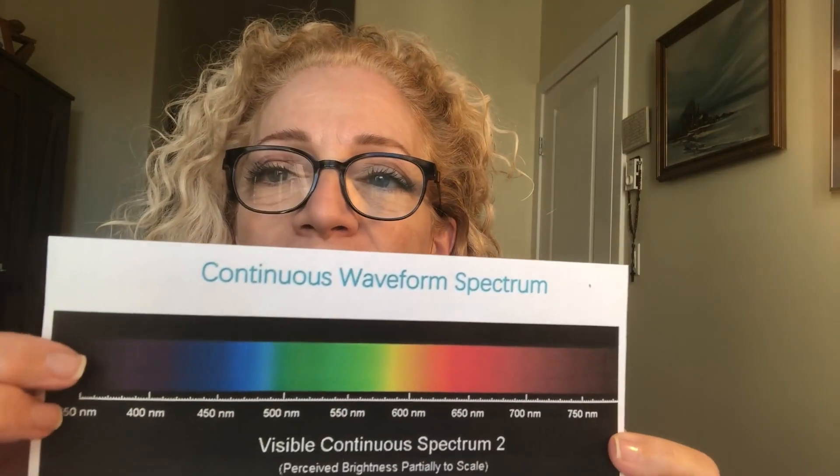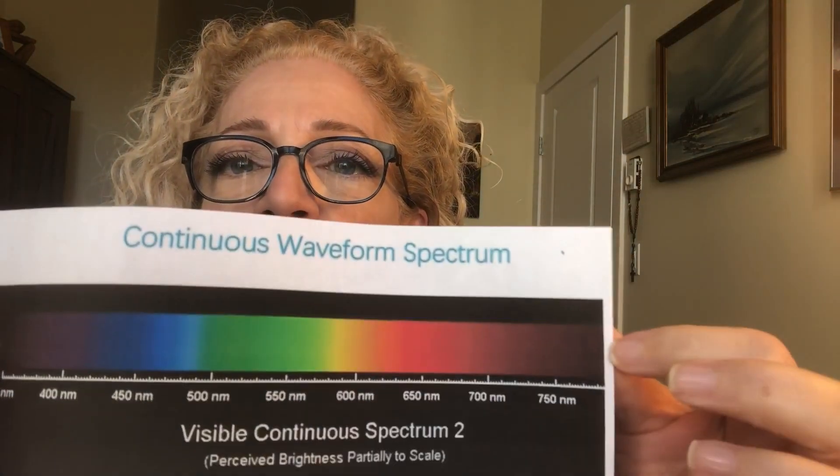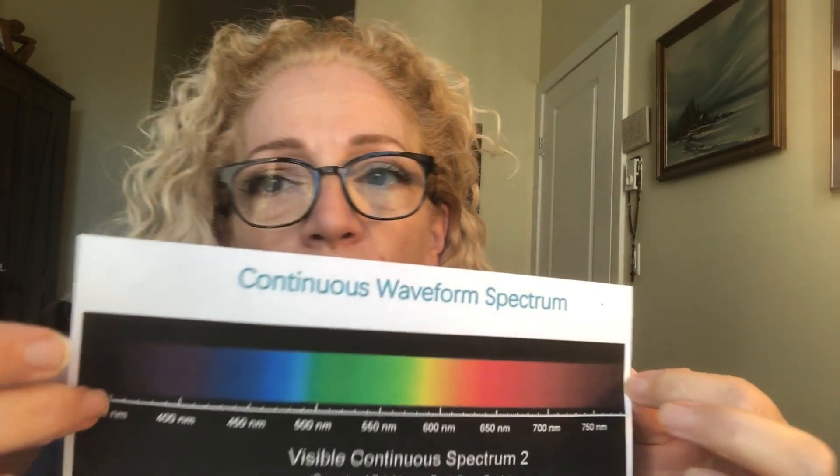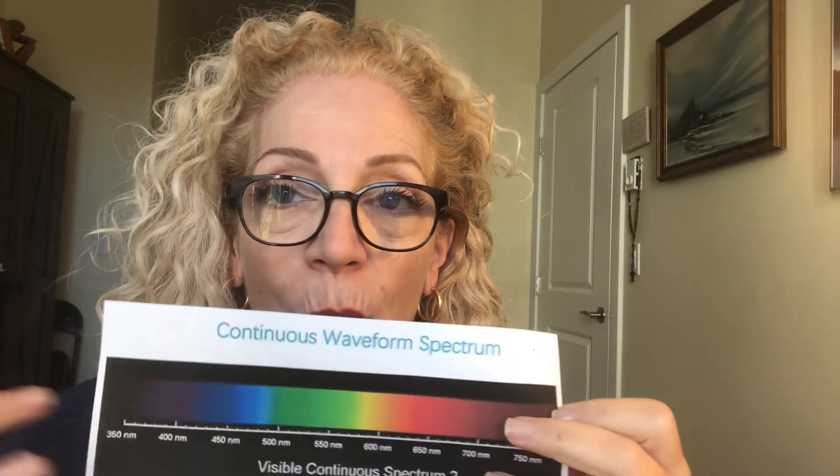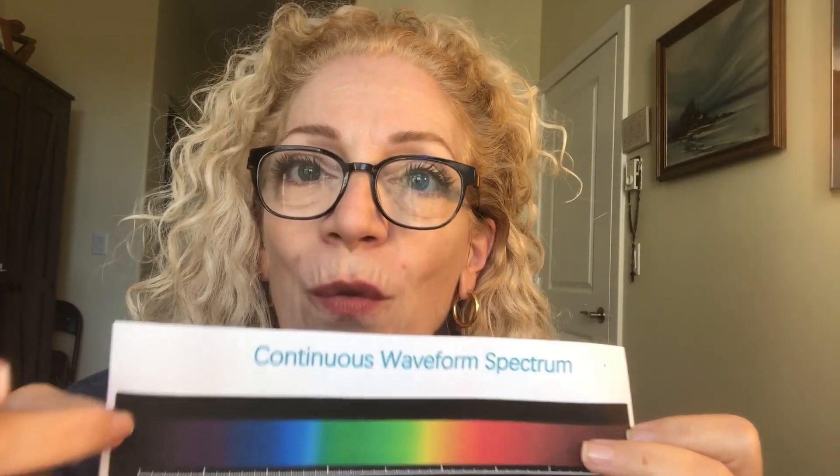I'm going to show you a diagram so you have a visual of the spectrum of light and wavelengths. From the shortest, which is UVA, UVB, and UVC, over to the infrared, which is the longest. UVC does not come through our ozone layer, however UVA and UVB do — and those are the ones you need to protect yourself from with sunglasses, a hat, and mineral makeup.